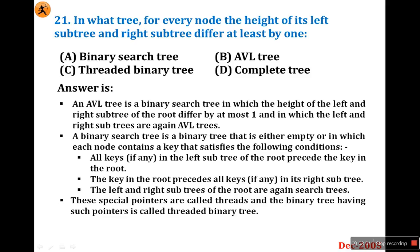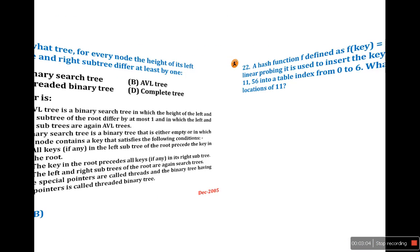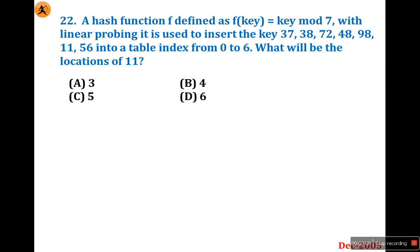Question number 22: A hash function f defines f(k) = k mod 7. Using linear probing to insert keys into a table indexed from 0 to 6, what will be the location of key 11? This is similar to the 2011 question already discussed. Let's work through the insertions.